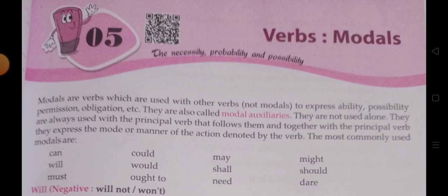Modal verbs are verbs which are used with other verbs to express ability, possibility, permission, obligation, etc. They are also called modal auxiliaries. They are not used alone — they are always used with a principal verb that follows, and together with the principal verb, they express the mode or manner of the action. The most commonly used modals are: can, could, may, might, will, shall, should, must, ought to, need, and dare.